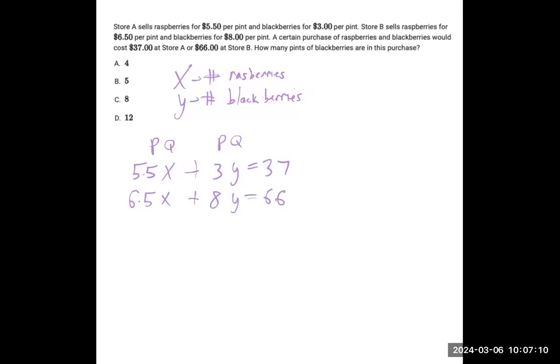Now we've got two equations and two variables, and we can start solving. We need to know the number of blackberries, which is Y. Ideally, we'd want to get rid of X first.